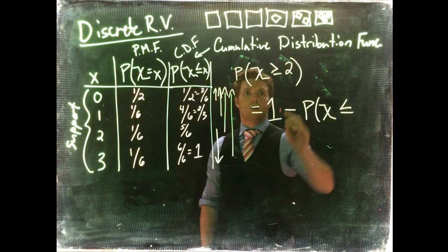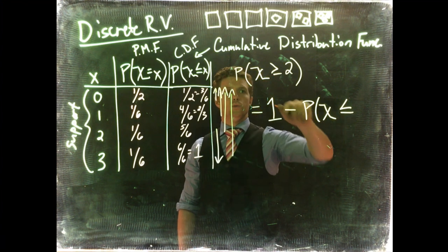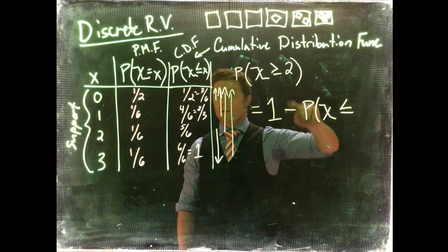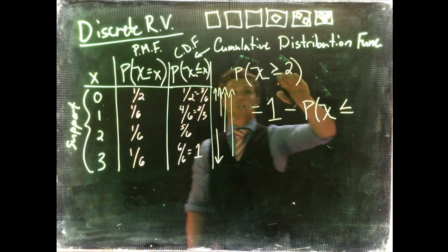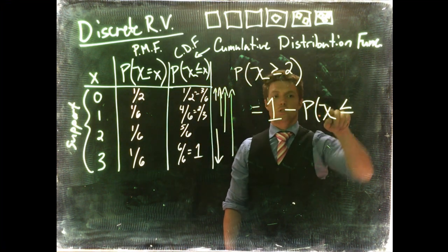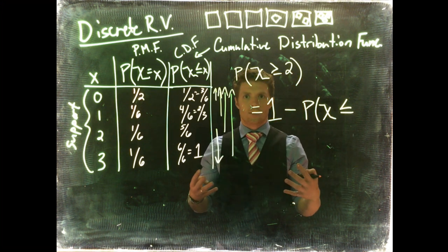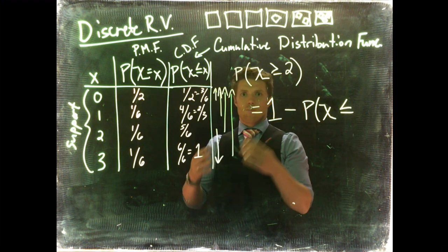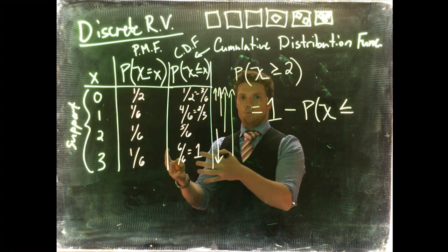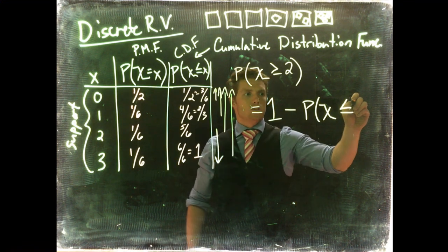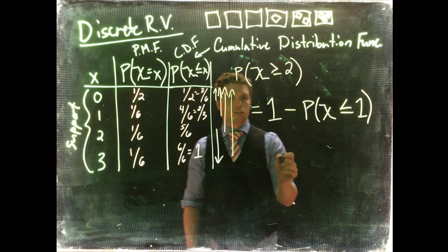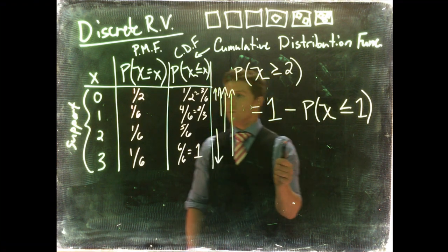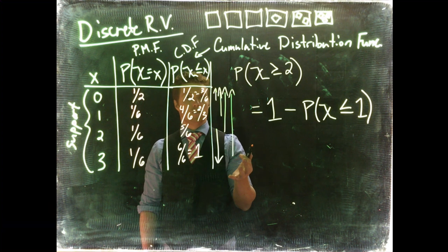Now we just have to know, okay, so if we're going to go less than or equal to in the complement, can we include 2? And we say, no, we can't include 2 because 2 is included in this probability, so it can't be included in our complement. It can't be in both. It can't be included in the complement and the non-complement. It can only be in 1. Okay, so in order to do that, we'd say 1 minus the probability of X being less than or equal to 1.